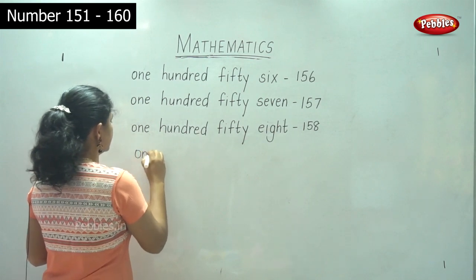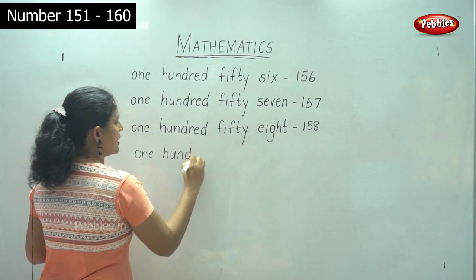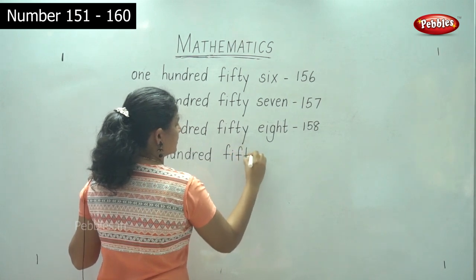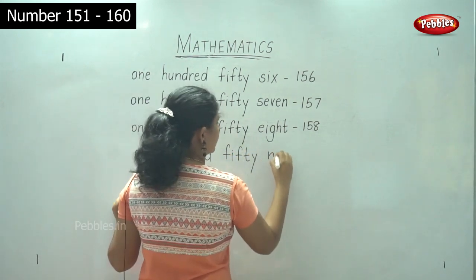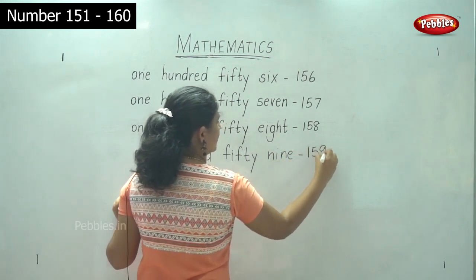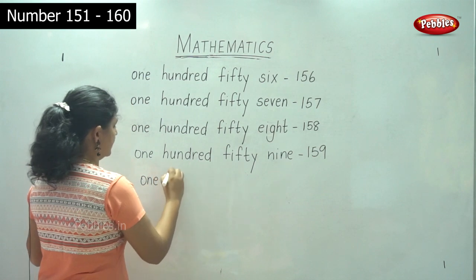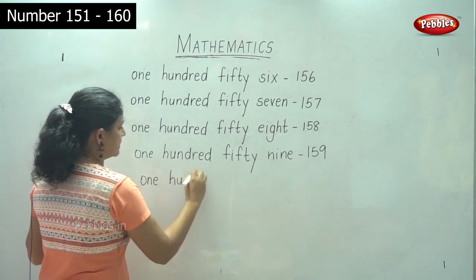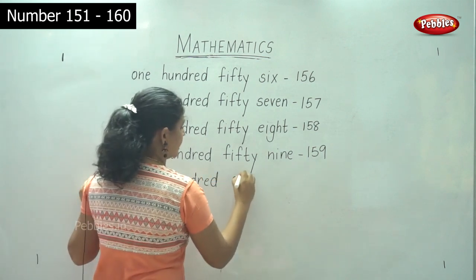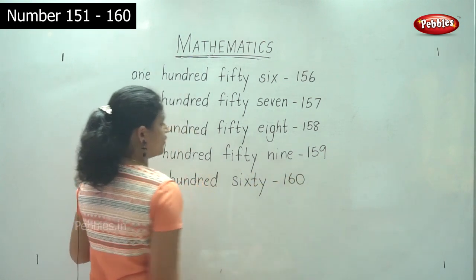159 is spelled O-N-E H-U-N-D-R-E-D F-I-F-T-Y N-I-N-E — 159. 160 is spelled O-N-E H-U-N-D-R-E-D S-I-X-T-Y — 160.